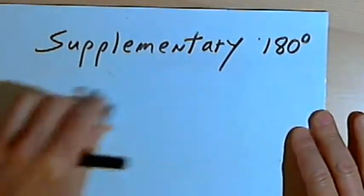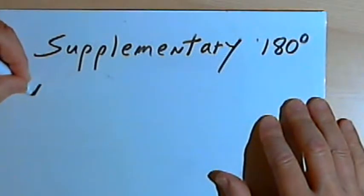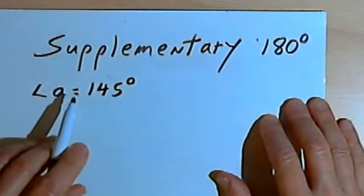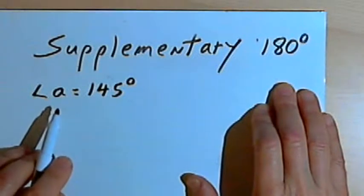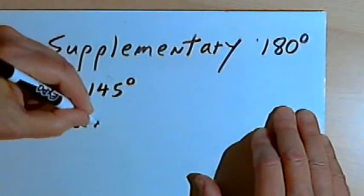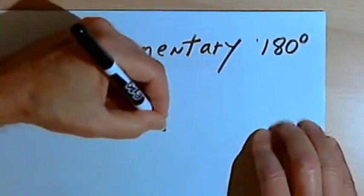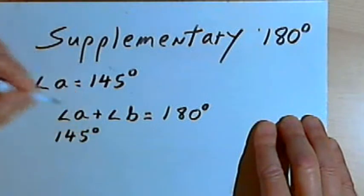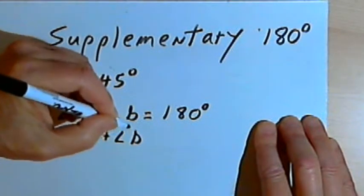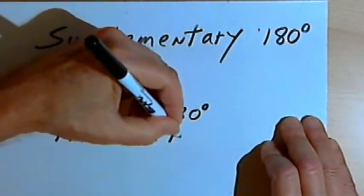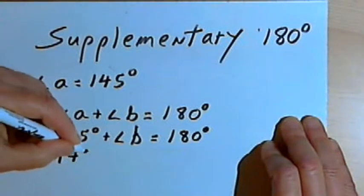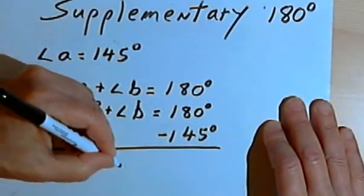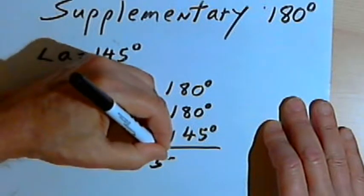And like complementary angles, if we know one of the angles — let's say angle A is 145 degrees and we want to find angle B so that angle A and B are supplementary angles — then we could say that the measures of angle A plus angle B equal 180 degrees. If angle A is 145 degrees, then 145 degrees plus the measure of angle B will be 180 degrees. We would subtract 145 from both sides of the equation, and we find out that angle B is going to equal 35 degrees.